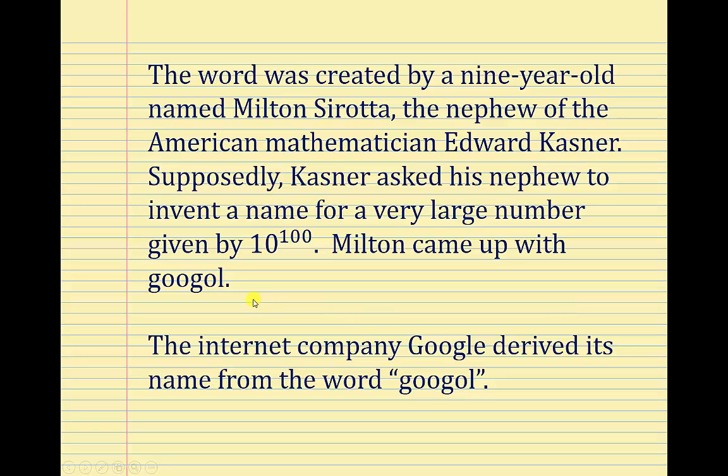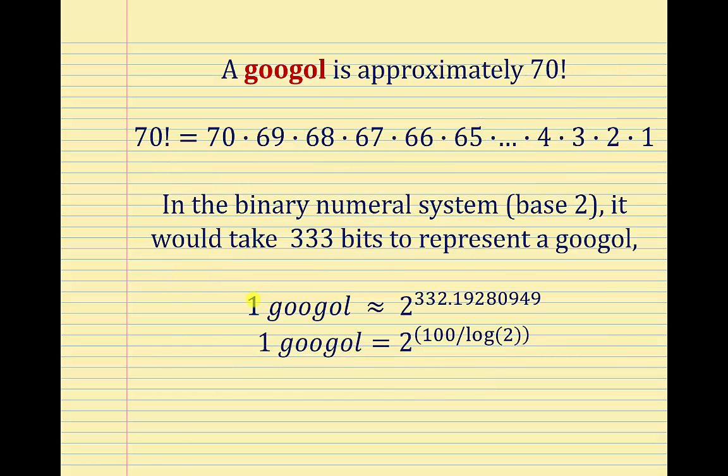Because googol is such a large number, it's really hard to wrap our minds around how large it is. For example, a googol is approximately equal to 70 factorial, where 70! equals 70 × 69 × 68, all the way down to × 4 × 3 × 2 × 1.